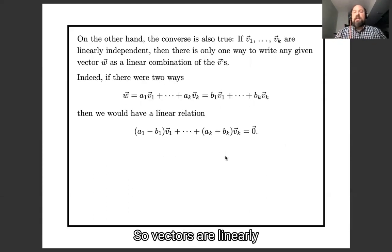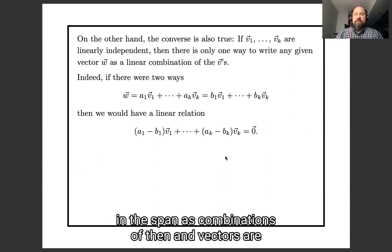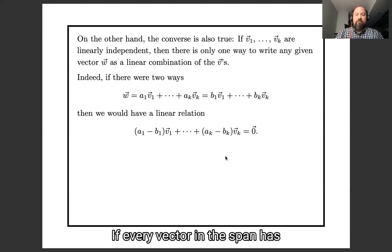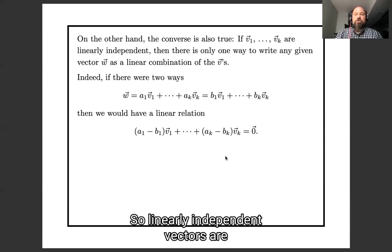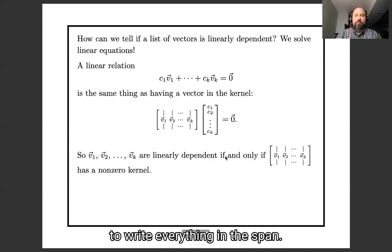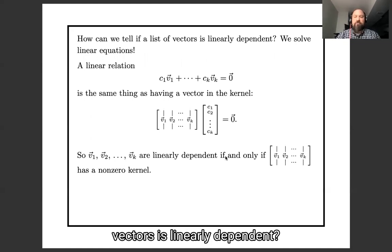Okay, so vectors are linearly dependent if there are many different ways to write vectors in their span as combinations of them, and vectors are linearly independent if there is only one way, if every vector in the span has a unique expression as a linear combination of these vectors. So linearly independent vectors are good because they give you an unambiguous way to write everything in the span.